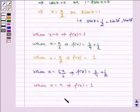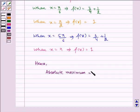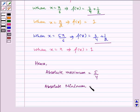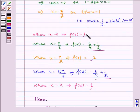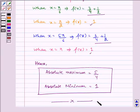Hence, absolute maximum equals 3/4 plus 1/2 that is 5/4. And absolute minimum equals 1. And this is our required answer. I hope you understood this question. Bye and have a nice day.